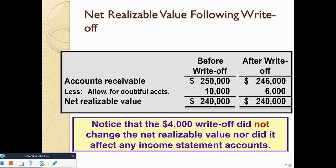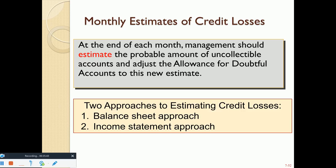There are three approaches to estimating uncollectibles. The best approach—not in the textbook—is to hire a credit manager who maintains a file on every customer and reviews each account individually. If there's doubt about collectability, record it in the allowance; if it becomes impossible to collect, write it off. The two textbook methods are the balance sheet approach and the income statement approach.